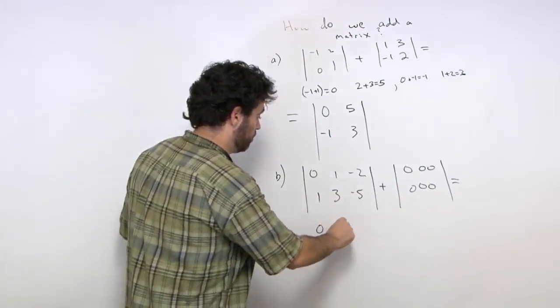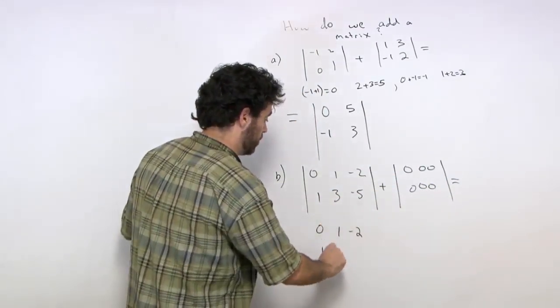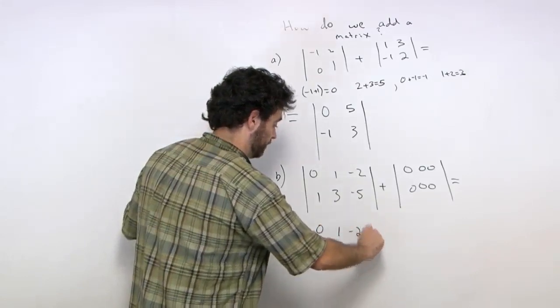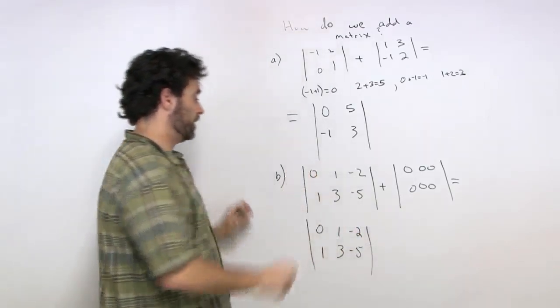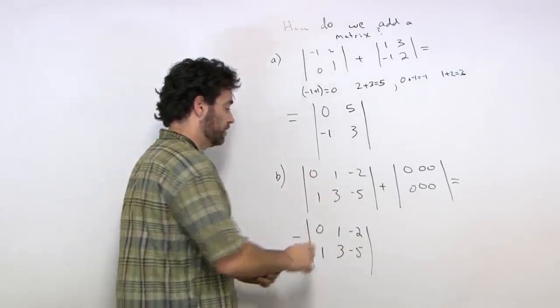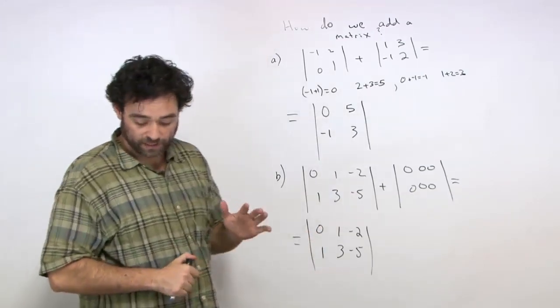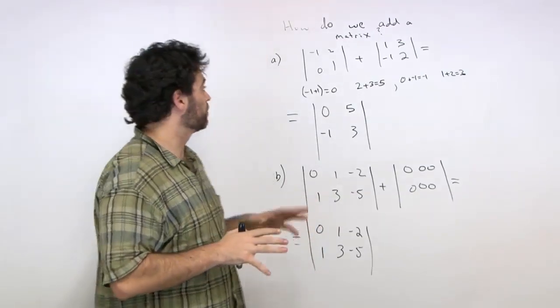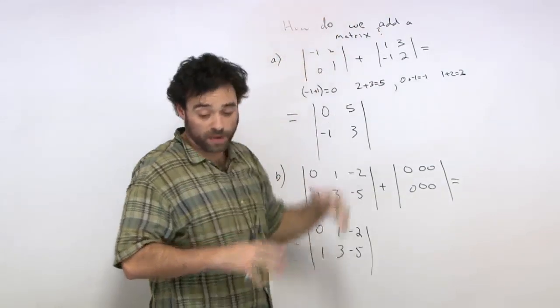So we're going to get back 0, 1, negative 2, 1, 3, negative 5. Okay? So not too bad. So we see the adding of the matrices, we're just adding the numbers that correspond.